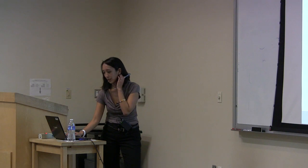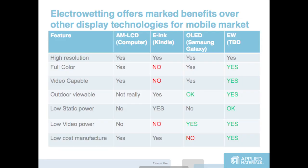You can still get high resolution because this uses standard display processes, so you can get transistors down to a certain pixel size. You can also get color, whereas Kindle is black and white. The way Kindle does color now is to put a color filter on top — and since Kindle is reflective, light hits the front plane and returns, so it goes through the color filter twice, losing light each time. In electrowetting you don't have that double loss.